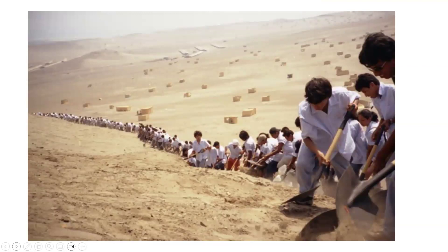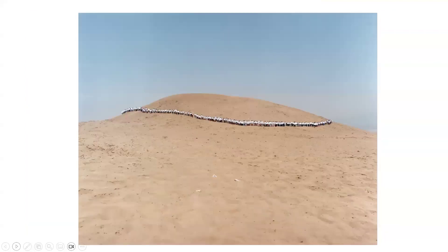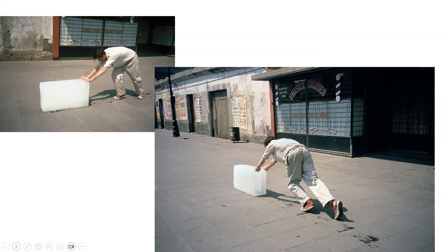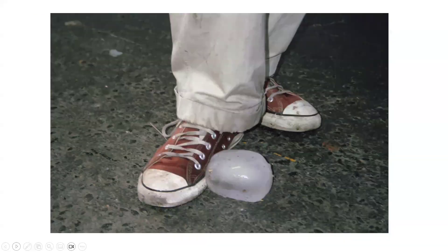This is Francis Alÿs, and he is a performance artist. Here are all these men actually moving a mountain. There's a video you can watch — it's about how sometimes to do something, you have to undo it. Here he is pushing a block of ice through Mexico City until it finally melts, and he makes a video of it.